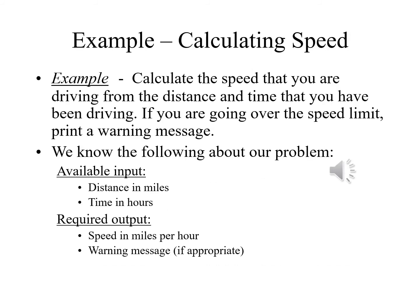Let's take a look at another example, where we're calculating the speed based on the distance you've driven and the time it took. If you're going over the speed limit, we will print a warning message. The inputs are distance in miles and time in hours; the required output is speed in miles per hour and a warning message if you've been going over the speed limit.